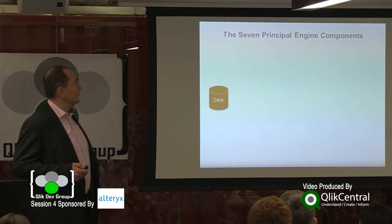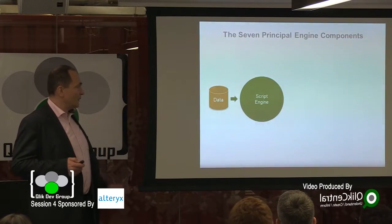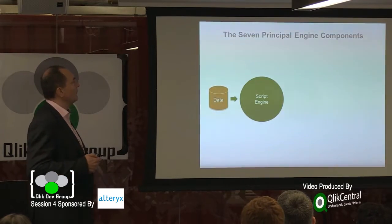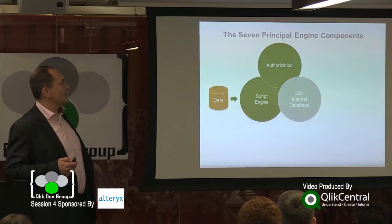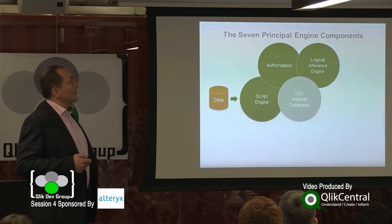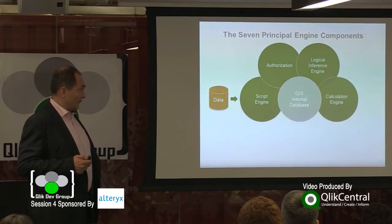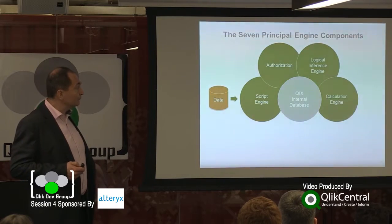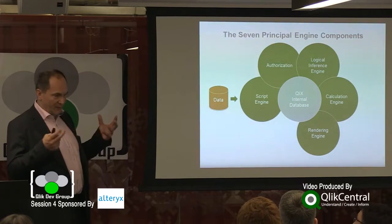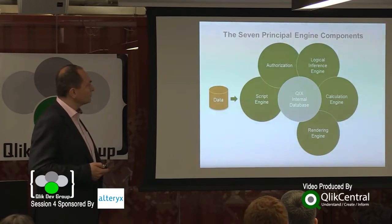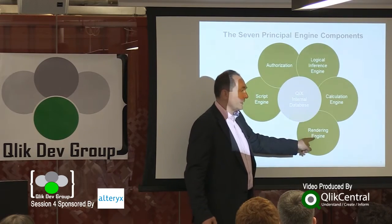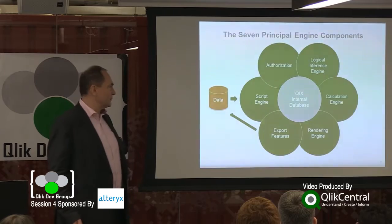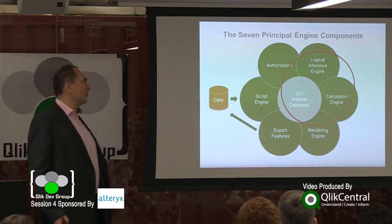The engine has seven principal components. The first one is a script engine — it runs the script and gets the data in there, then puts the data in an internal database. Once you've saved your file, there is one component which manages authorization when you open the file. When you click, you invoke the logical appearance engine, and all the charts use the calculation engine. Then there is one rendering engine which creates all the pictures, all the tables, everything you see on the screen. So basically, if you think of a pivot table or a bar chart, it exists both here and here. And finally there are some export features. I will mainly talk about the three components off to the right here.